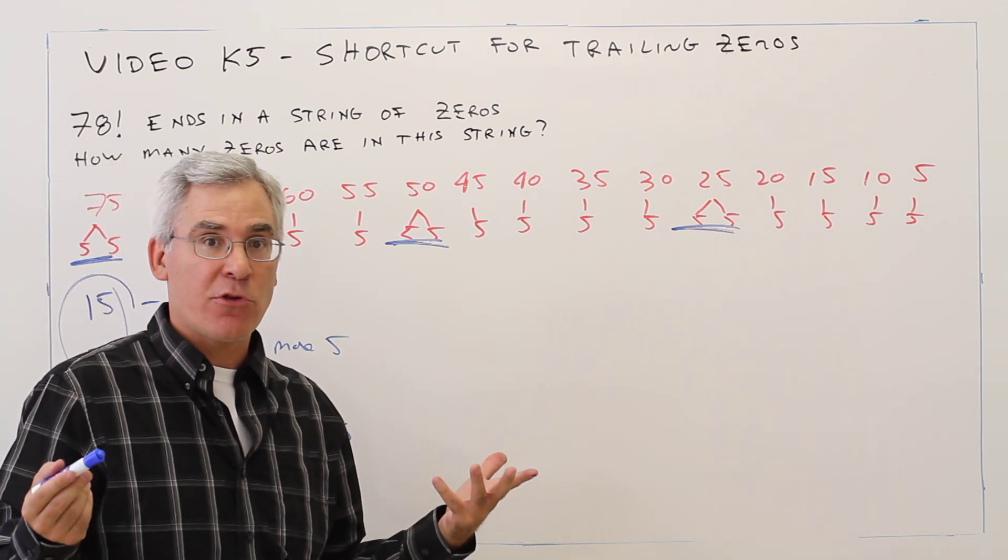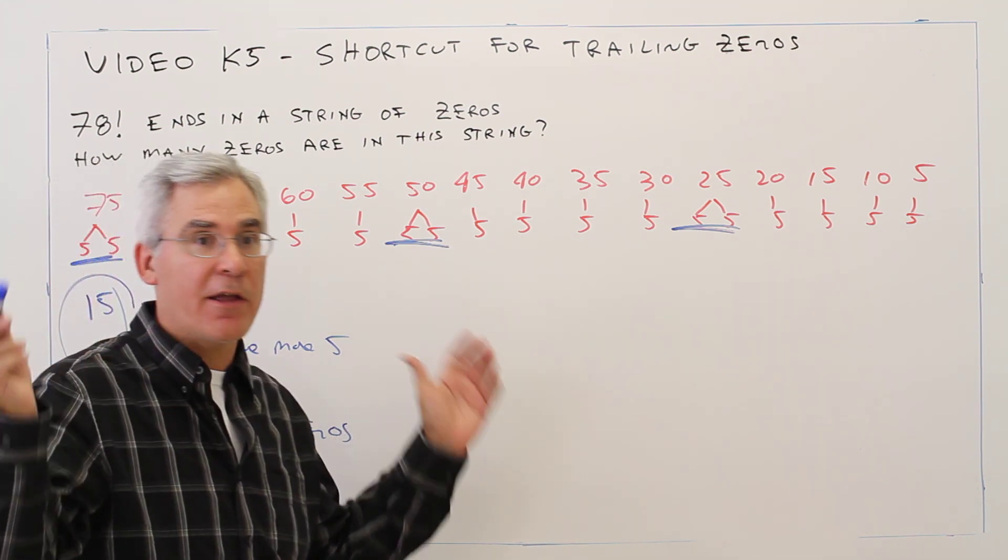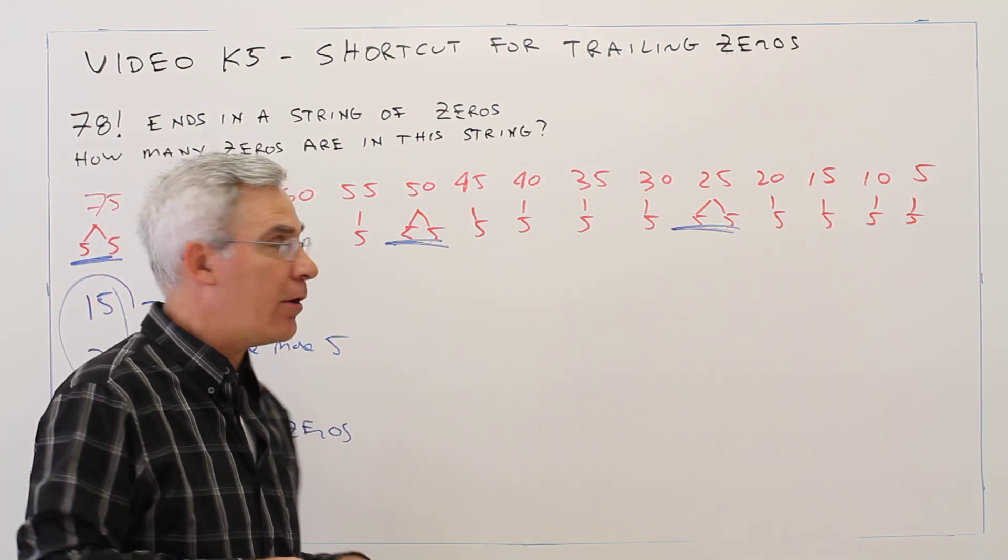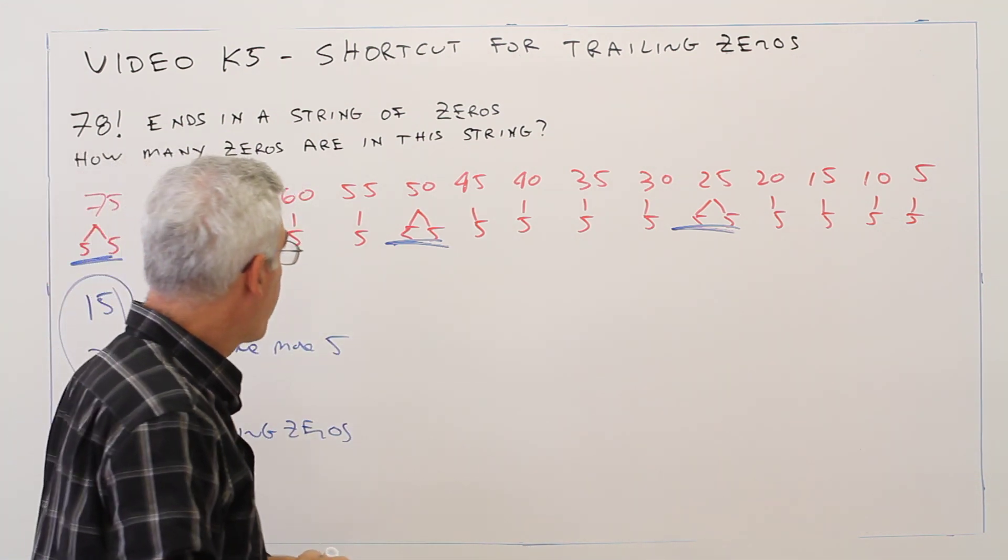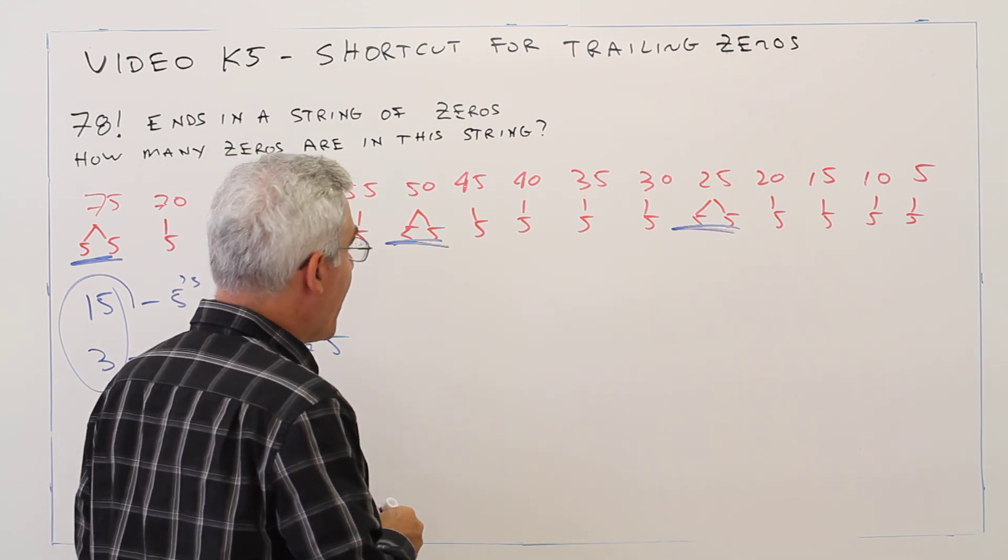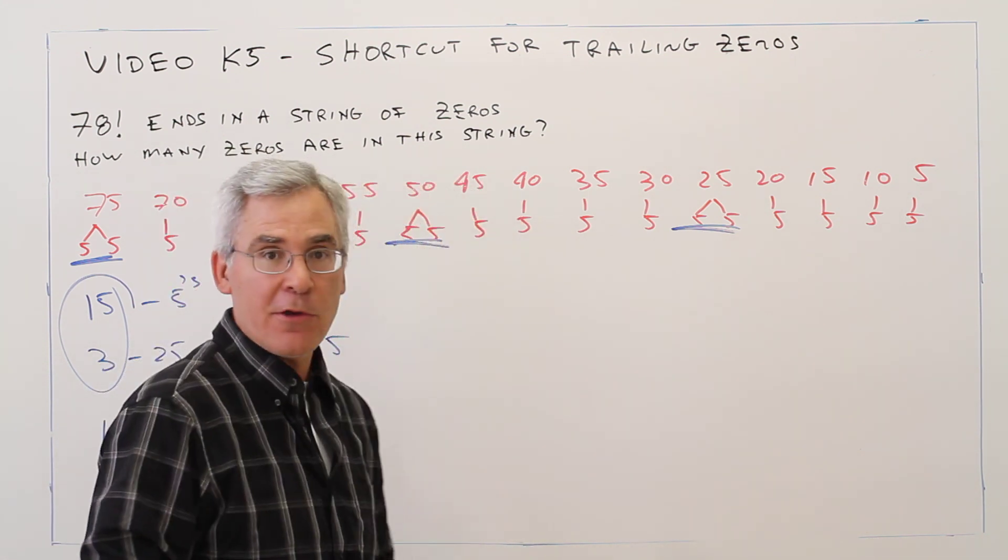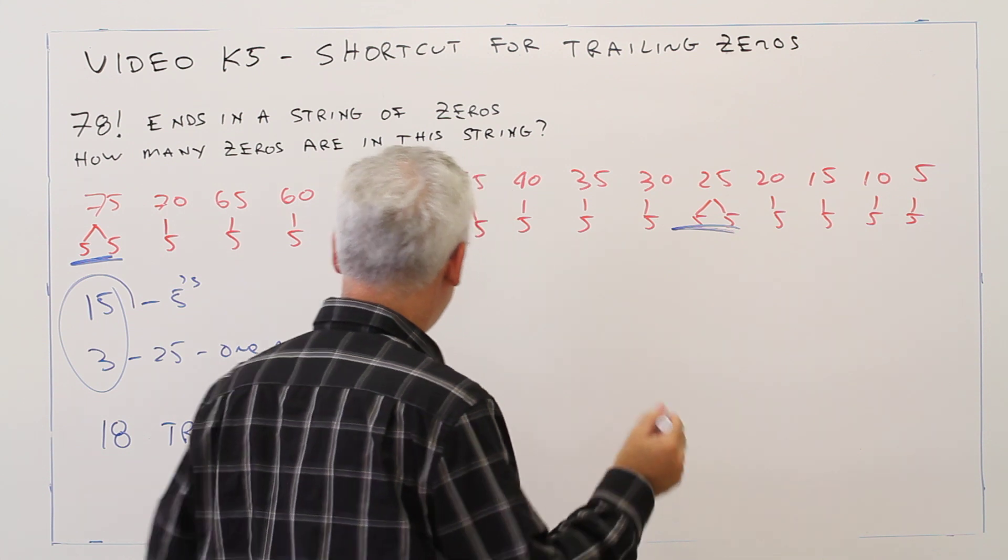Now let me show you the shortcut, which is going to be helpful if I give you a problem like 5,000 factorial. You're not going to want to make this list. Alright, so for the shortcut, all we're going to do is keep dividing by 5. So here we go.